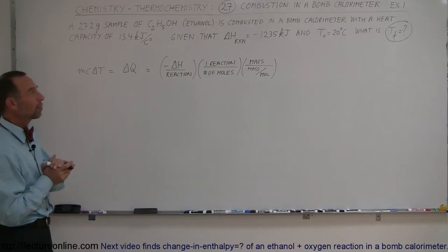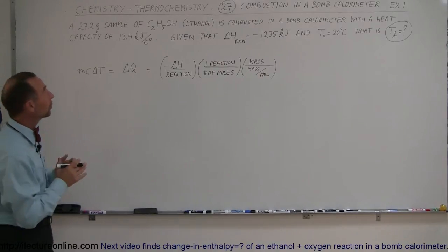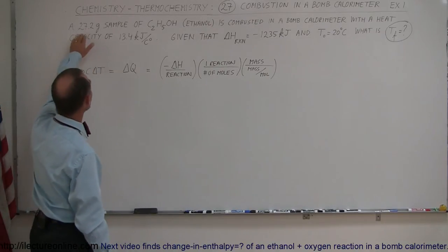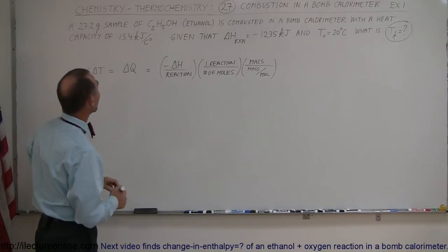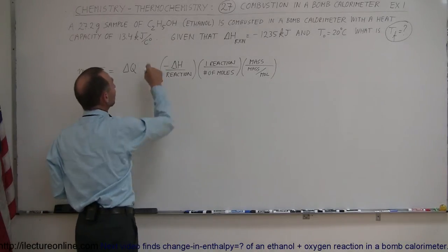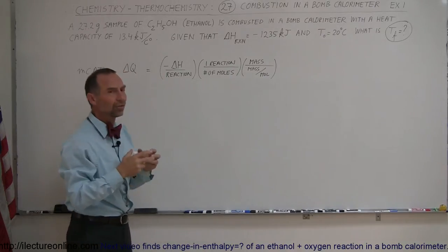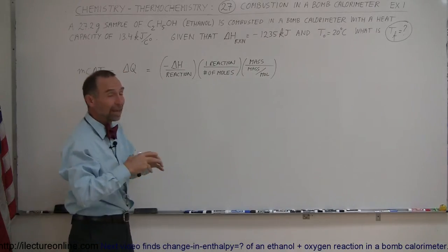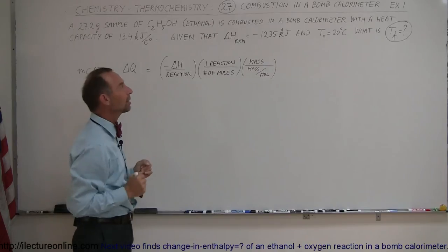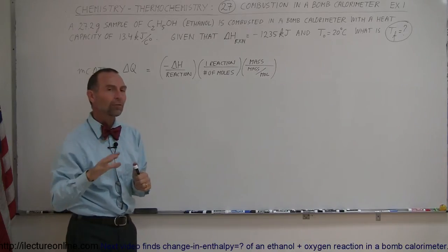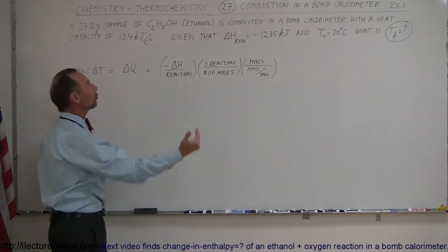Here we're going to use an example using the bomb calorimeter because we're taking a sample, 27.2 grams of ethanol, and we're going to combust it or burn it in a bomb calorimeter. There we're producing gases that could expand, so we want to contain the expansion so that all of the heat generated in the reaction goes into the calorimeter.